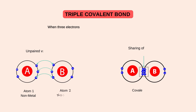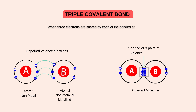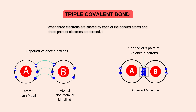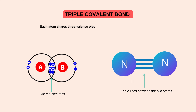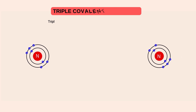Triple covalent bond — by definition, when three electrons are shared by each of the bonded atoms and three bond pairs of electrons are formed, it is called triple covalent bond. Asan alfaz mein, triple covalent bond covalent bond ki wo qisam hai, jis mein har atom tien tien electron ki mutual sharing kerta hai, aur tien bond pair wujud mein aate hai. Jaisa ke aap ko video mein nazer a raha hai, triple covalent bond ko atoms ke dharmian three line se indicate kiya jata hai.